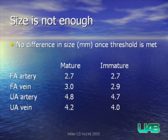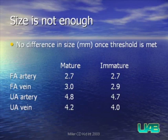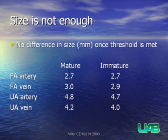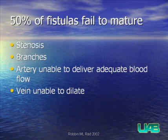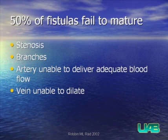It has been shown that for fistulas created, if you look at vessels prior to surgery, there is no difference in vessel size when comparing mature to immature fistulas, once you reach the size threshold of 2.5 millimeters in the vein or 2 millimeters in the artery. Even though these size criteria may be met, 50% of fistulas may fail to mature, due to stenosis, branches of the draining vein, inadequate arterial inflow, or other factors preventing the vein from adequately dilating.